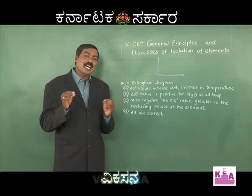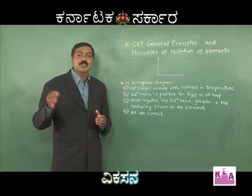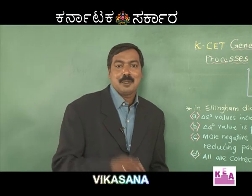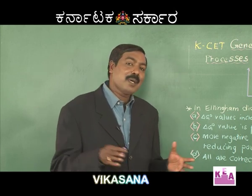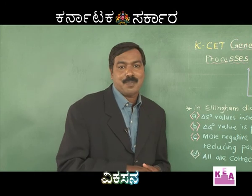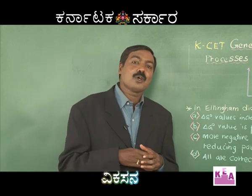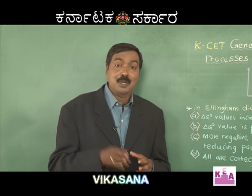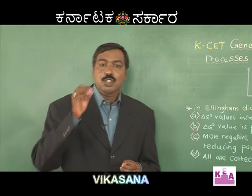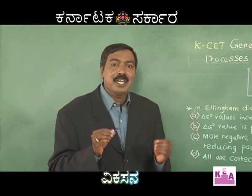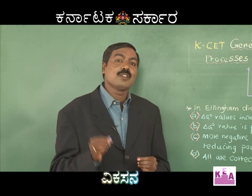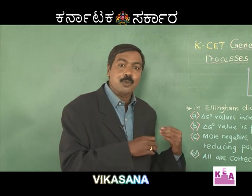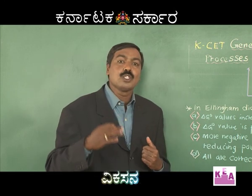Ellingham's diagram is a graph of standard free energy versus temperature. Ellingham's diagram is used to select, predict, and elect the best and most suitable reducing agent. In metallurgy we have come across plentiful reducing agents. The most common reducing agent is carbon, but the choice of the reducing agent is dependent on the nature of the metal oxide. Therefore Ellingham's diagram is helpful in gauging which is the best and most suitable reducing agent.